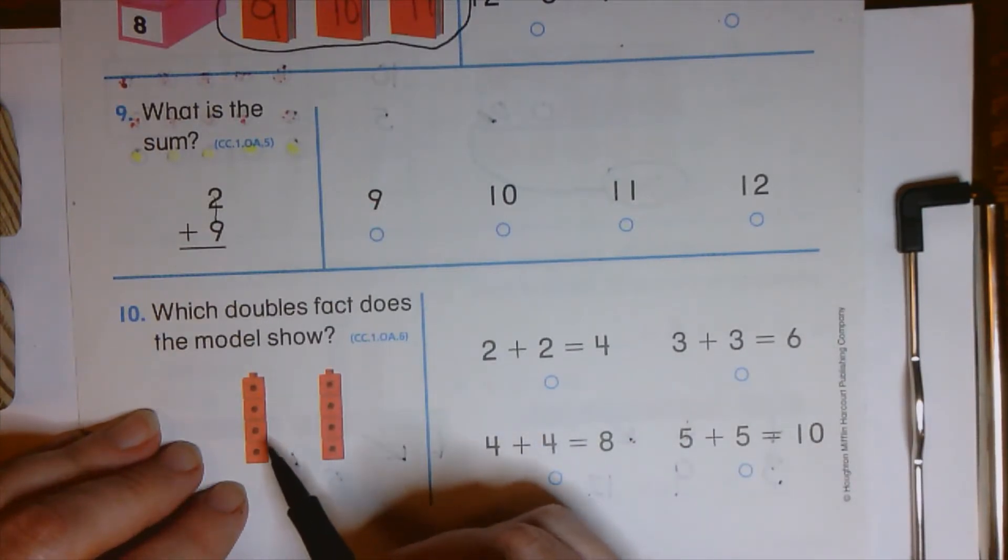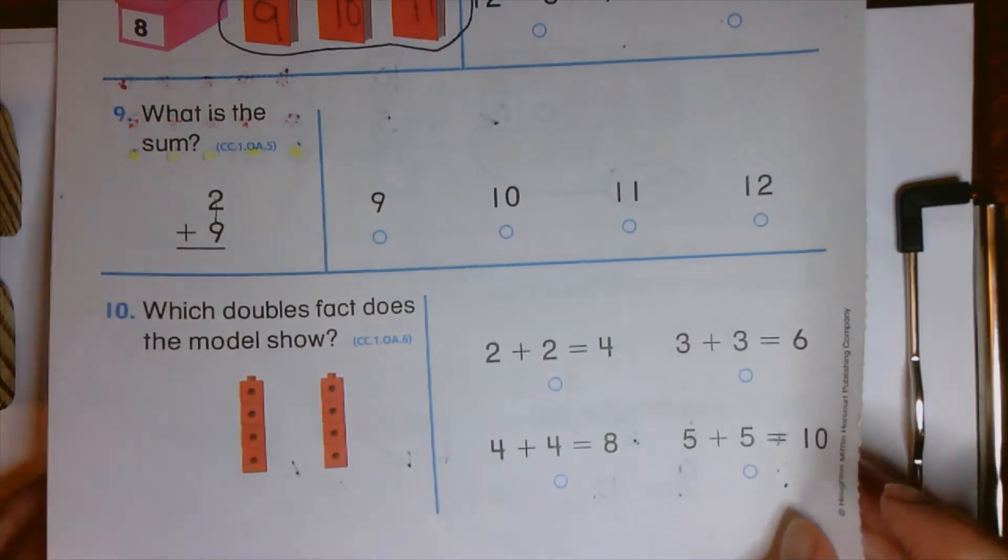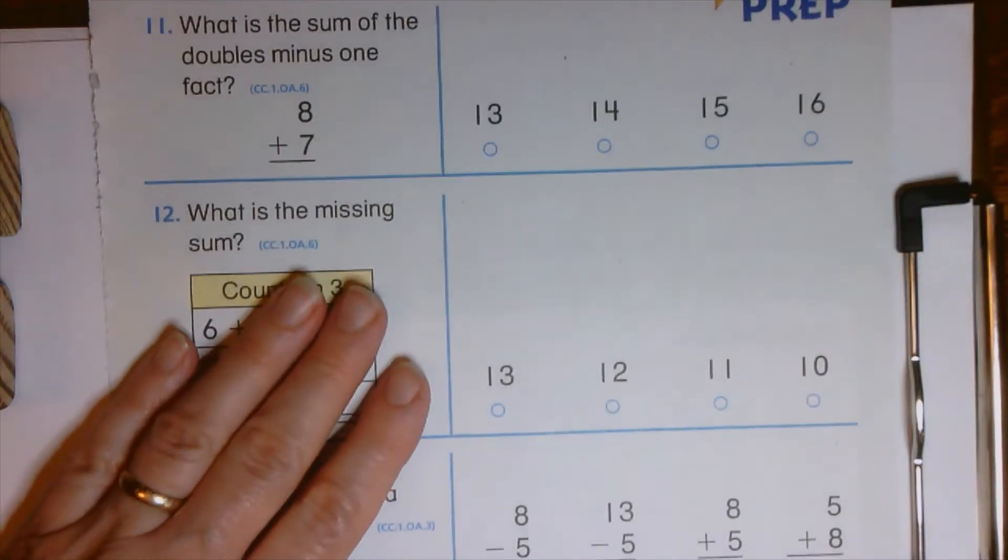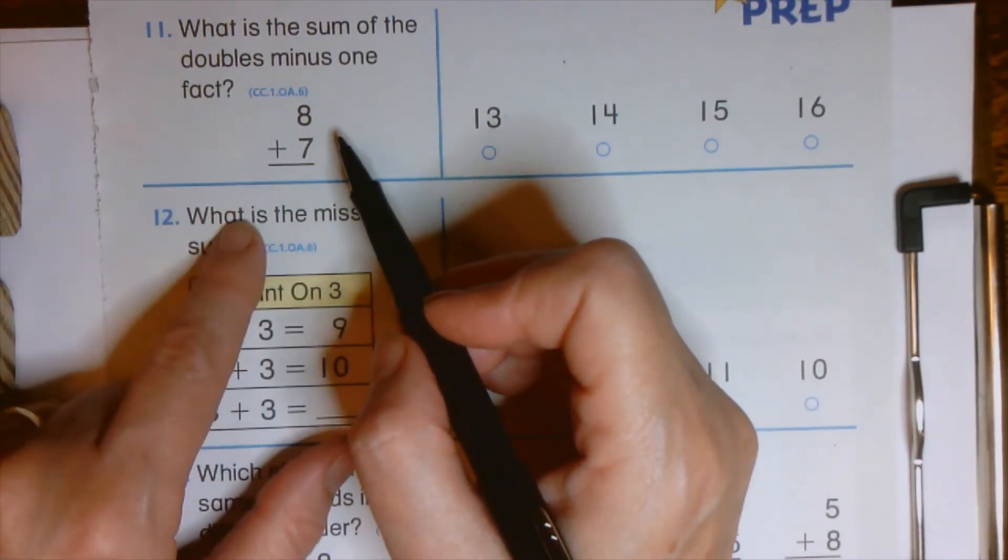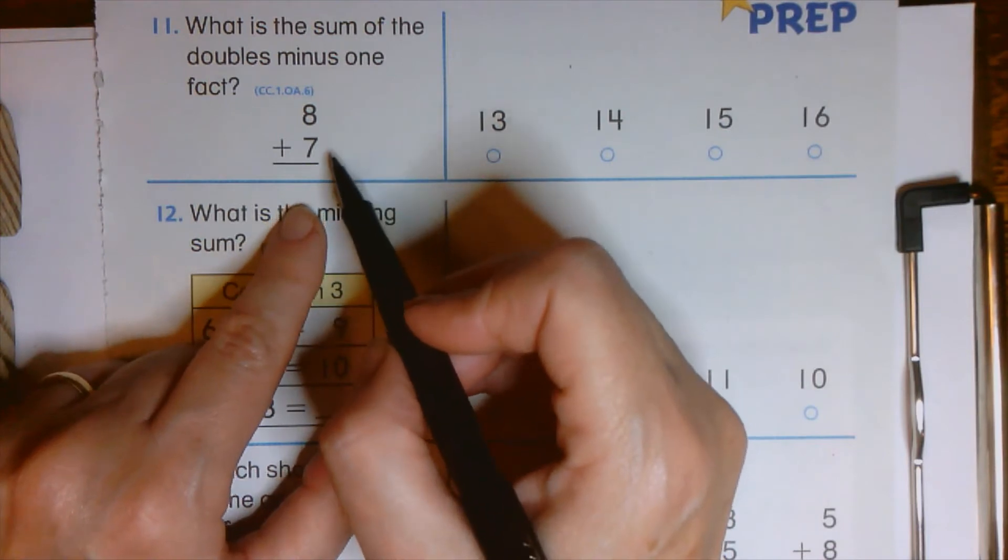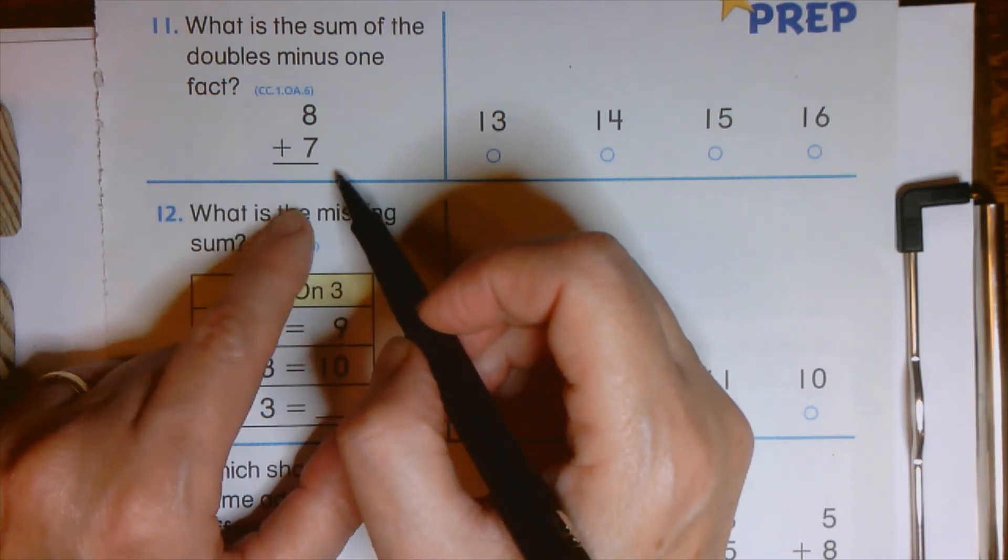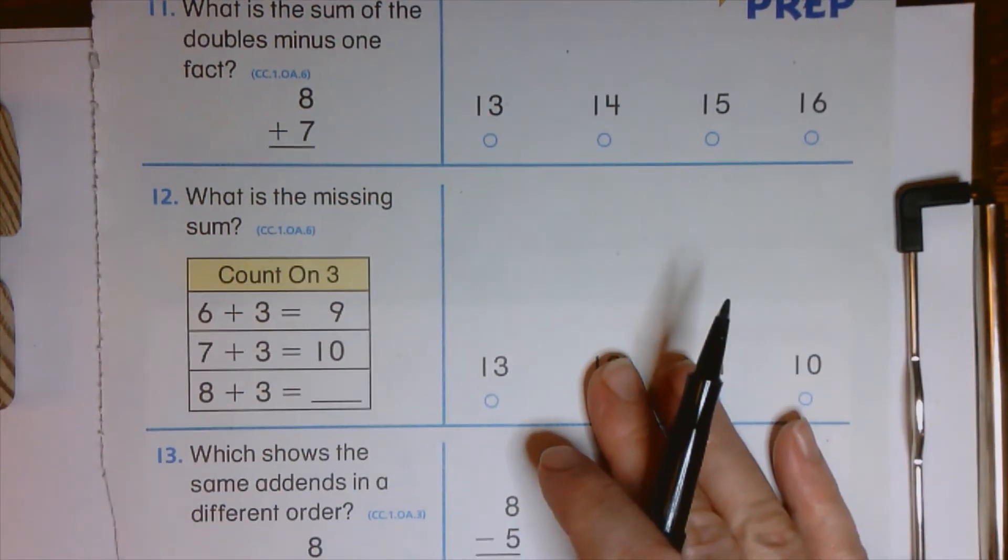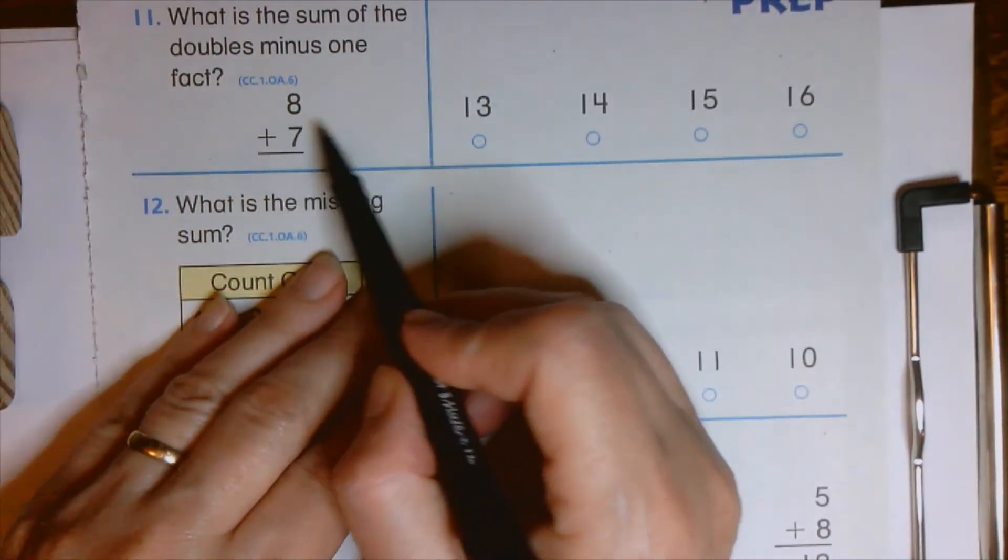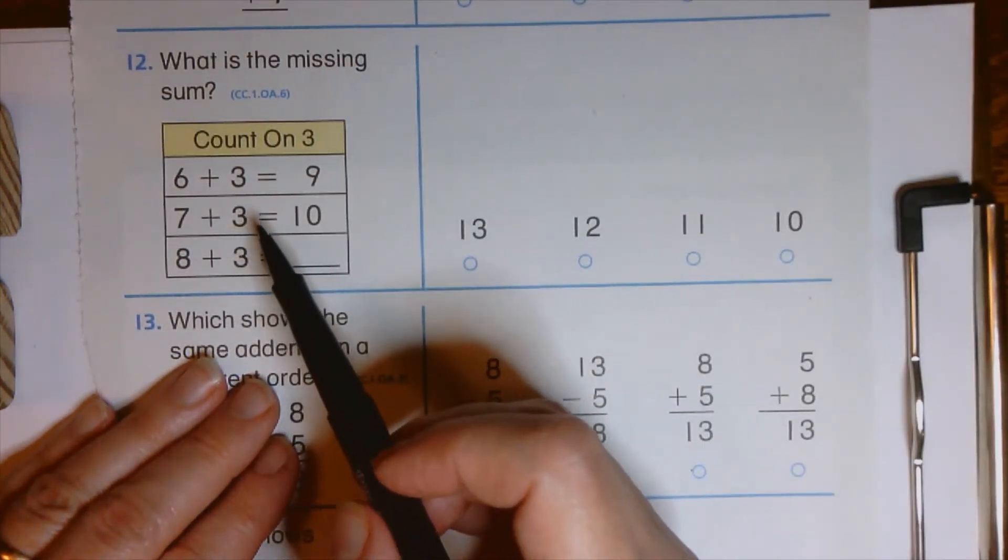Which doubles fact does the model show? Oh, you guys can figure that one out. Oh my goodness. Even though it's been a long time, I know you know how to do that. The sum of the doubles minus one fact. Boys and girls, do you remember seven plus seven or eight plus eight? This is set up for doubles minus one, so it would be eight plus eight. If you're not sure you remember that, you can try some other strategies to figure that out. But one reason we need to come back to this is because we need to get some of these math facts really memorized.